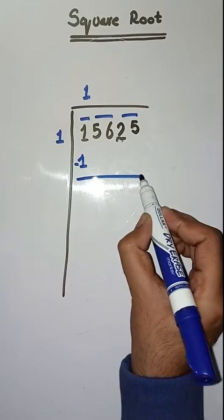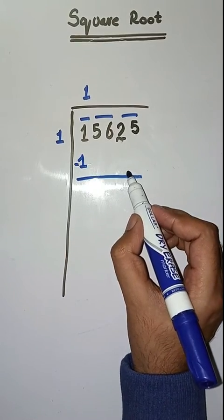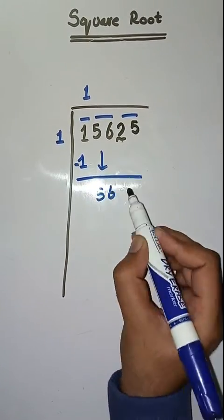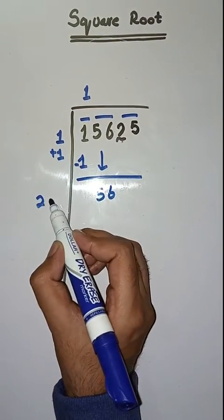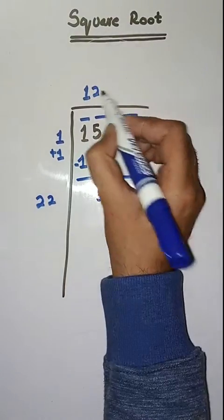So next pair is 56. We bring it down. Here we do 1 plus 1 which is equal to 2. So we will take a number 2. 22, 2's are 44.